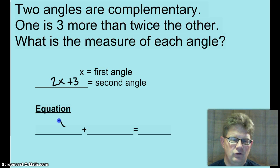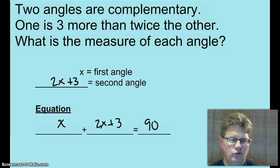And they are complementary. So x plus 2x plus 3 equals 90. Go ahead, pause, and solve, and I'll show you if you're right or not.